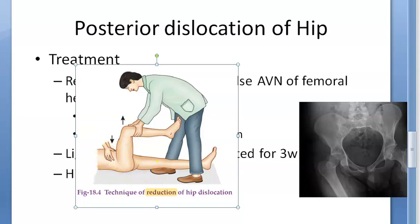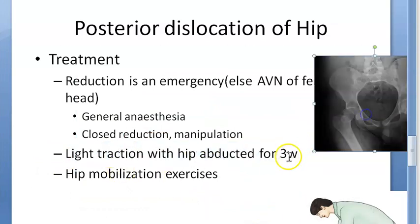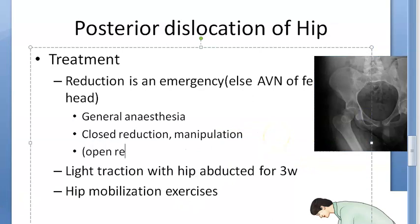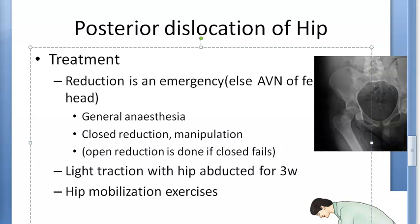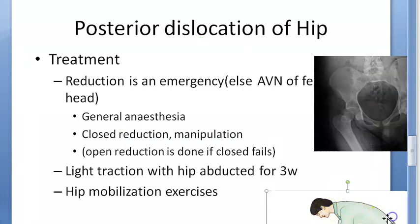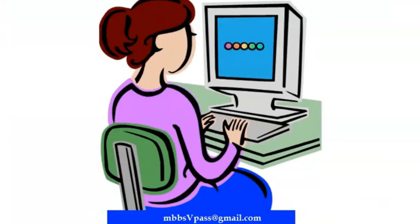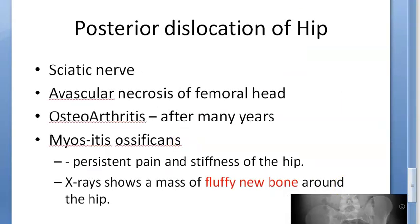In the technique, an assistant grasps the pelvis firmly while the surgeon positions the patient supine on the floor with the hip flexed and knee at 90 degrees, then performs an axial pull. You'll hear the sound of reduction, after which the hip is freely mobile. Post-reduction: light traction with hip abducted for three weeks, then hip mobilization exercises. Open reduction is done if closed reduction fails — this requires surgical intervention, though even closed reduction requires general anesthesia.